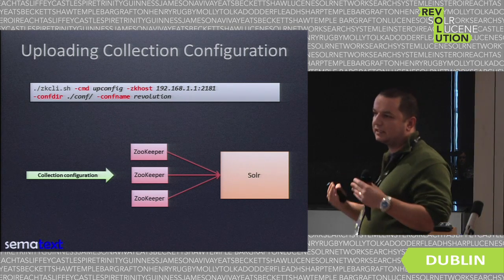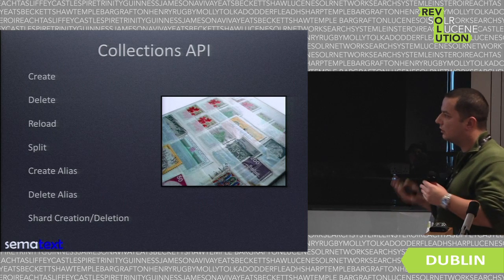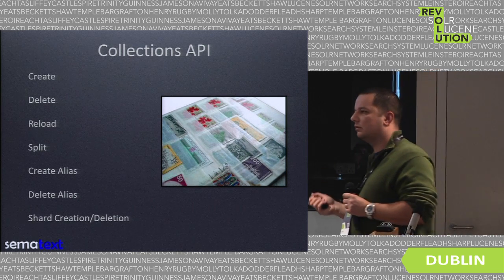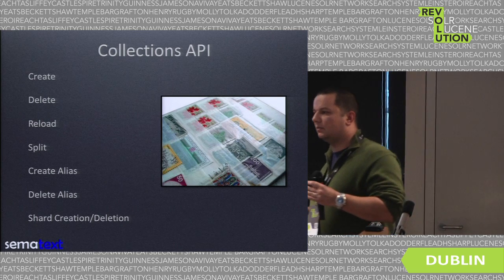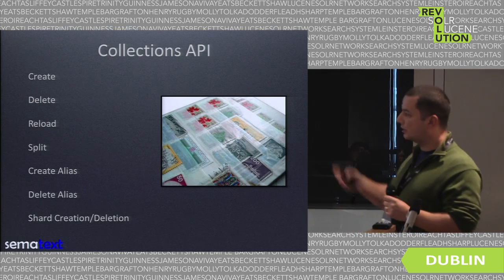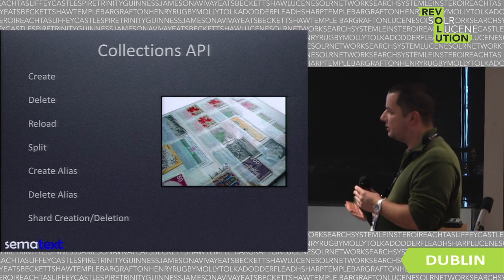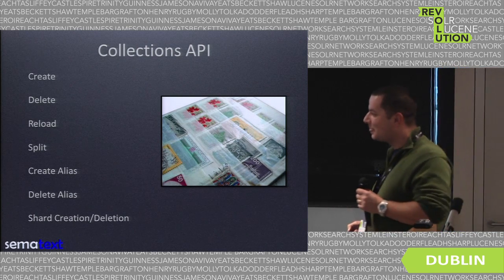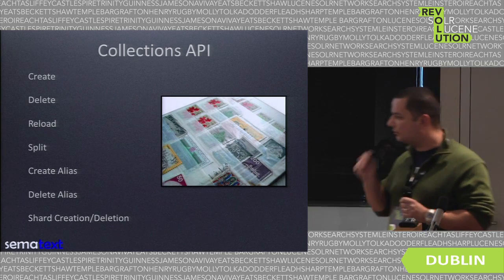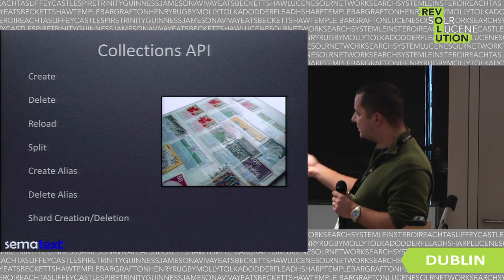If your data or configuration changes — for example, if you want to change the caches or anything in solrconfig or in the schema — you don't have to delete the collection and create it again; you can just reload it. We can split collections, which allows us to split an existing shard into two shards and create more shards for existing collections. We can create aliases and delete them if we want to operate on a single name while collections are changing. We can also create and delete particular shards when using non-default routing.